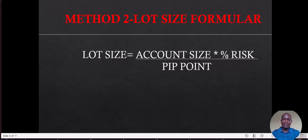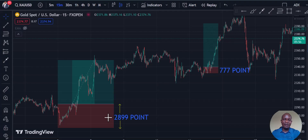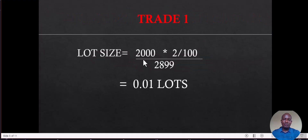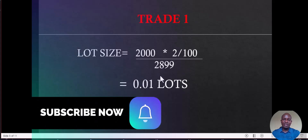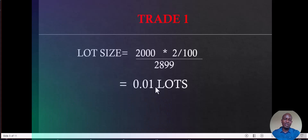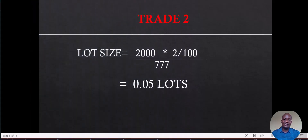If we take the first trade as an example: 2000 × (2/100) = 0.02, divided by 2899, which equals 0.01 — the same result as the online calculator. And for the second trade: 2000 × (2/100) = 0.02, divided by 777, which equals 0.05. You can see it's the same result as the online calculator.